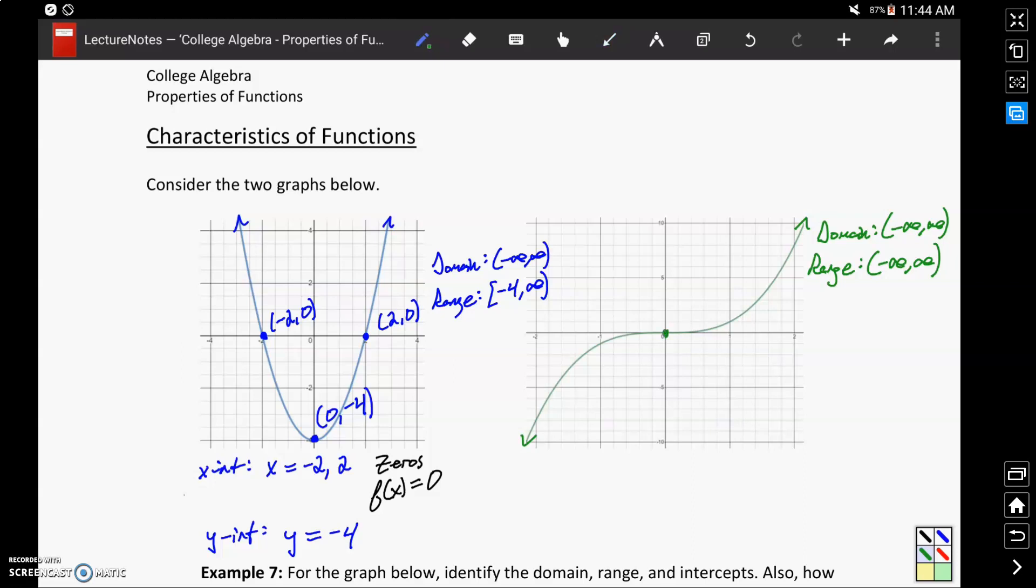In this case we only have a single intercept which occurs at the point x equals 0. So our x-intercept would be at x equals 0, and our y-intercept would also be at y equals 0.